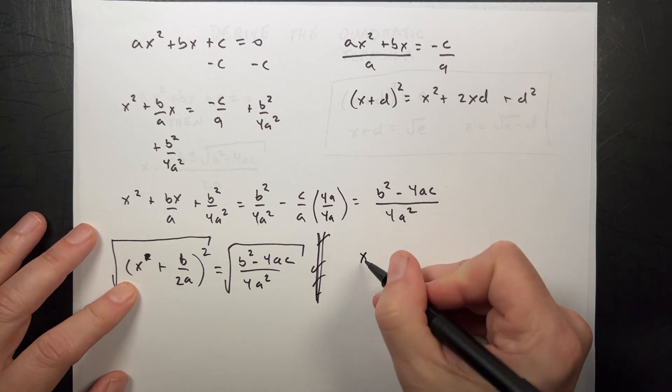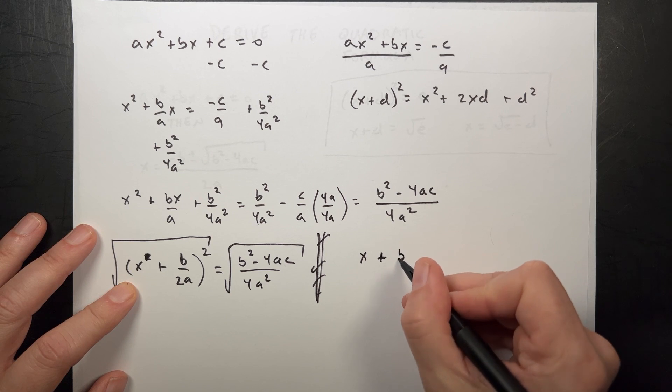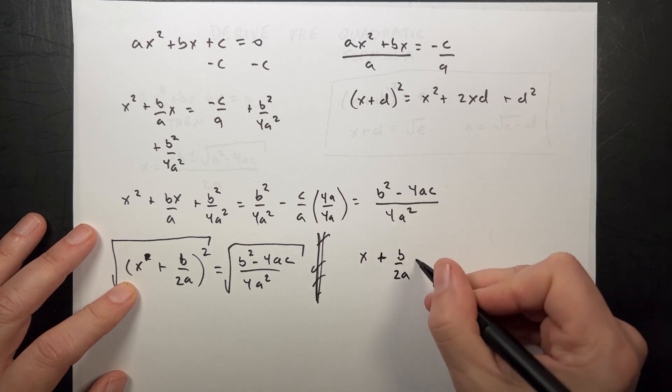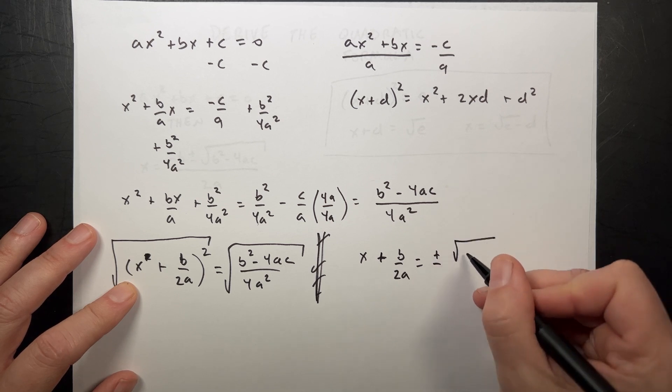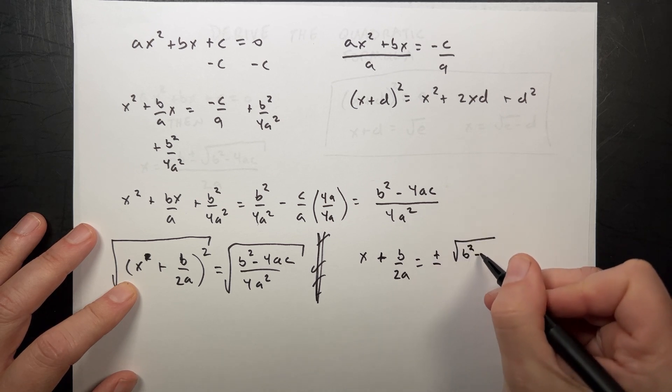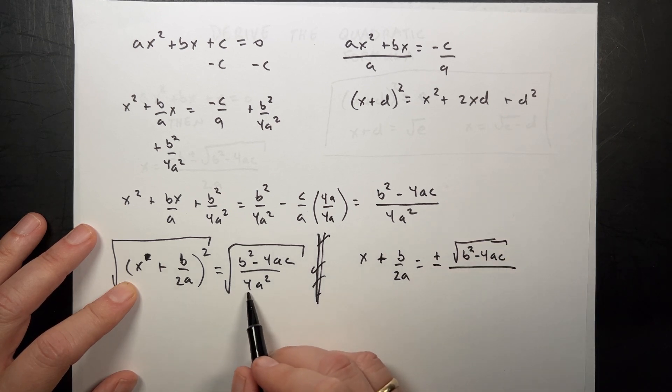So this becomes x plus b over 2a equals plus or minus the square root of b squared minus 4ac over the square root of this. But the square root of 4a squared is 2a.